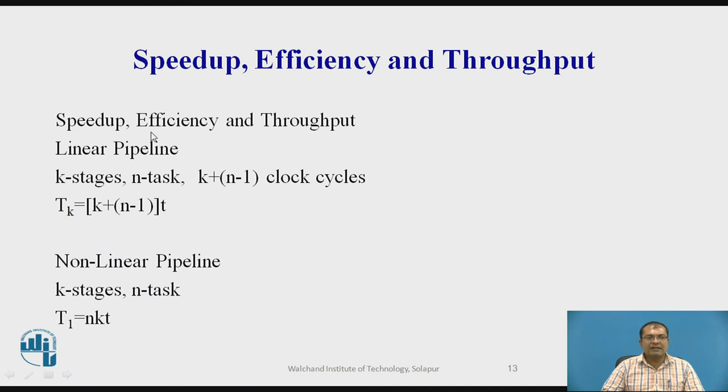So next speed of efficiency and throughput. So normally the linear pipeline which is having k stages and n tasks, which requires k plus n minus 1 clock cycles. So k plus n minus 1 into t that gives the total time taken to execute all the instructions. So that is tk.